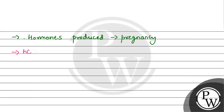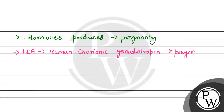जो हमारा HCG hormone होता है, इसका full form होता है Human Chorionic Gonadotropin. HCG के levels pregnancy test के समय detect किए जाते हैं - pregnancy test के time पर जो levels detect करके बताया जाता है कि pregnancy start हो गई है, वो HCG के levels होते हैं.